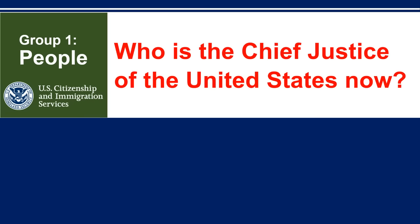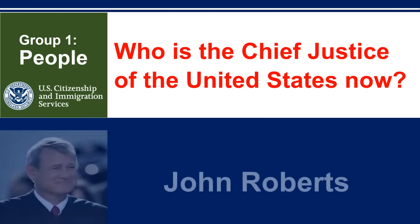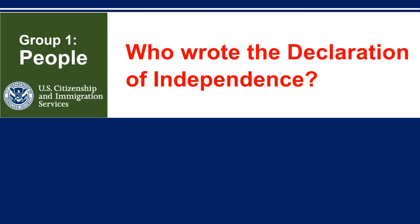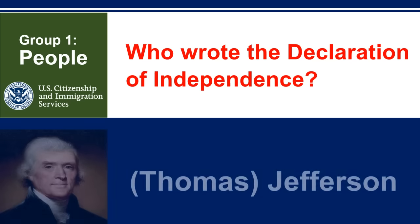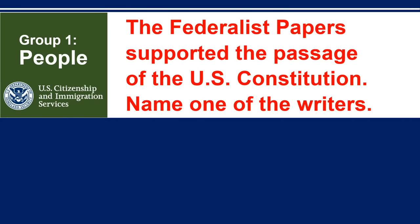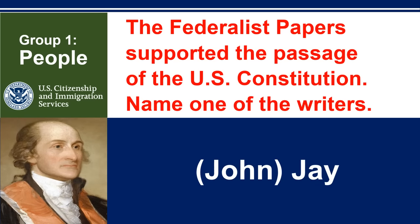Who is the Chief Justice of the United States now? John Roberts. Who wrote the Declaration of Independence? Thomas Jefferson. The Federalist Papers supported the passage of the U.S. Constitution. Name one of the writers. John Jay.